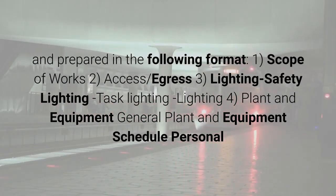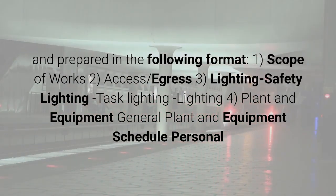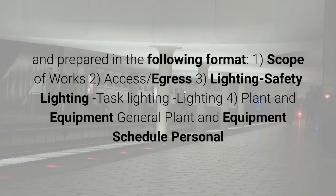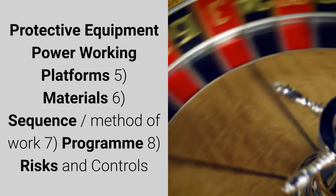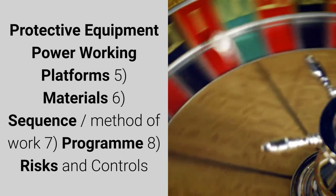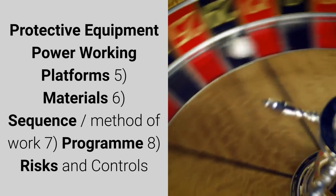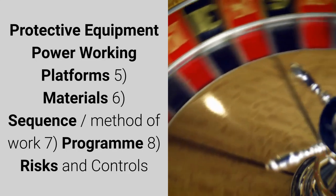1. Scope of works. 2. Access and egress. 3. Lighting — safety lighting, task lighting. 4. Plant and equipment — general plant and equipment schedule, personal protective equipment, power, working platforms. 5. Materials. 6. Sequence and method of work.